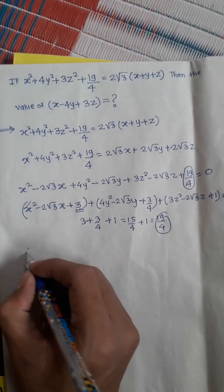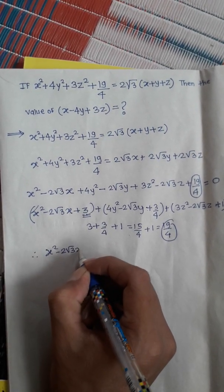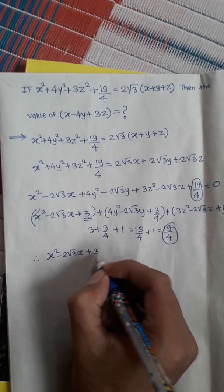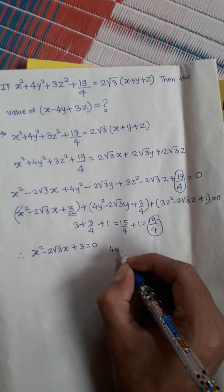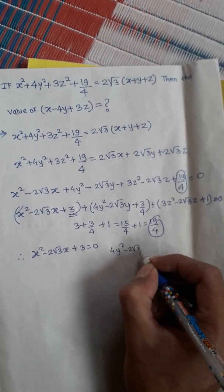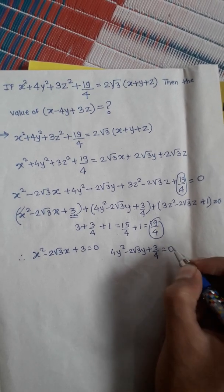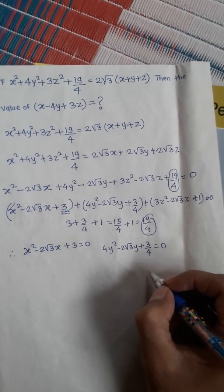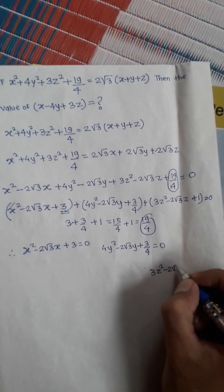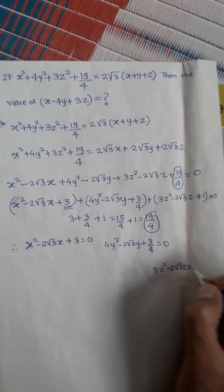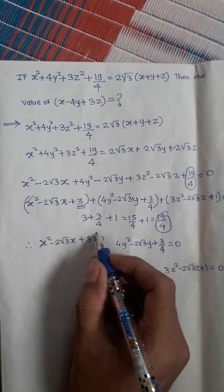Since all brackets are equal to zero: x² - 2√3·x + 3 = 0, and 4y² - 2√3·y + 3/4 = 0, and 3z² - 2√3·z + 1 = 0. Now we will find the values of x, y, and z.